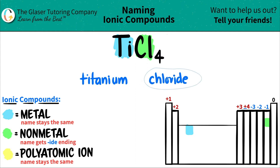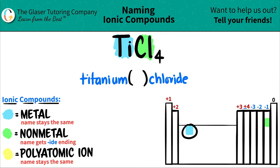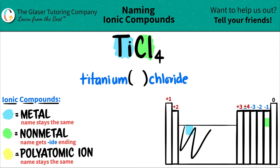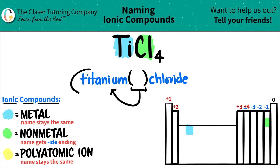Now we just have to see: do I need a Roman numeral? Roman numerals are for transition metals. Since titanium is part of the transition metal block, I do need a Roman numeral. And remember, the Roman numeral is always the charge of the metal.